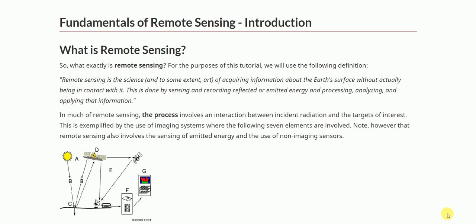First chapter: Fundamentals of Remote Sensing. Remote sensing is the science of acquiring information about the earth's surface without actually being in contact with it.